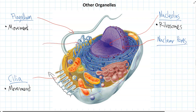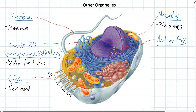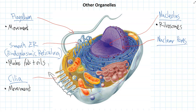The next couple of organelles are all made of membranes folded and stacked on top of each other. This set of membranes, like a whole lot of tubes joined together, is called the smooth endoplasmic reticulum — smooth ER for short. The smooth ER's job is to make a whole lot of fats and oils for the cell. This is really important because every membrane in the cell is made of fats and oils, so cells couldn't exist without all those fat and oil molecules.